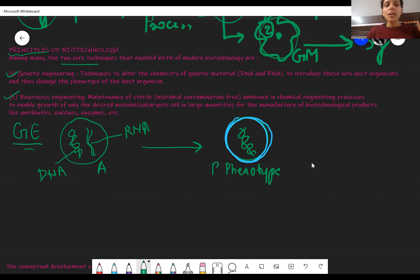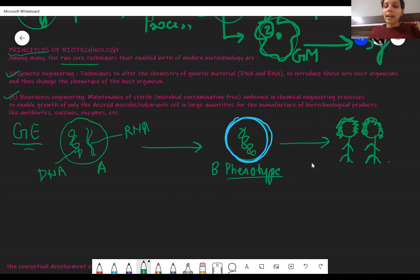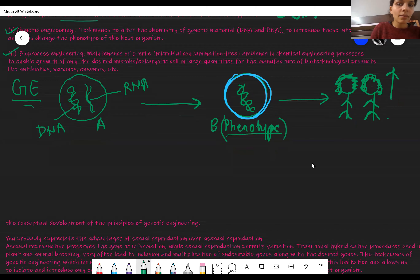Because of this introduction, the phenotype of the organism changes. For example, let's say organism A's DNA or part of A's DNA is introduced into organism B. Once introduced, some changes will be seen in organism B — its phenotype will change. Phenotype means the characteristics visible from outside, like in humans: hair color, hair type, height — these visible characteristics are called phenotypic characteristics.